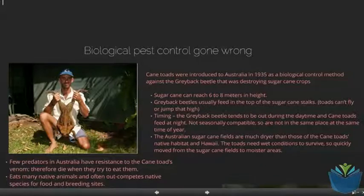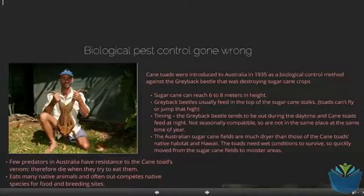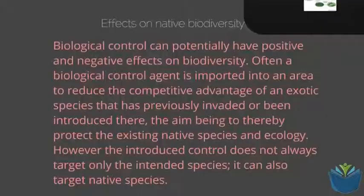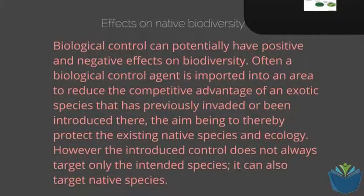Lots of organisms there hadn't developed immunity to the poison, so their numbers increased and they've now become quite a widespread pest. In this case, they've become more of a pest than the original beetle. Learning whether an organism you introduce could have a positive or negative effect on biodiversity is basically the whole key to this type of management.